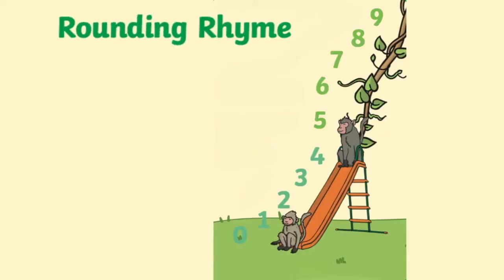We've got a handy rounding rhyme to help you remember. Five to nine, climb the vine. Zero to four, slide to the floor.